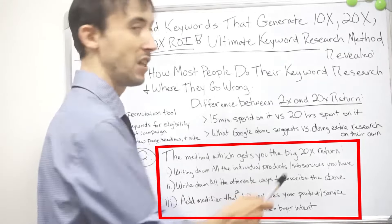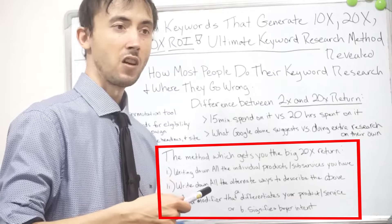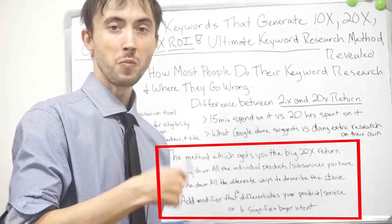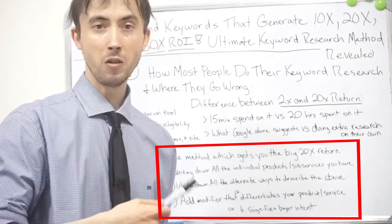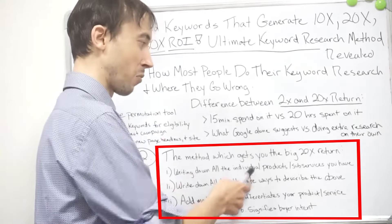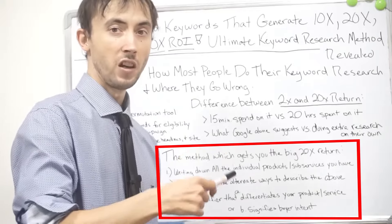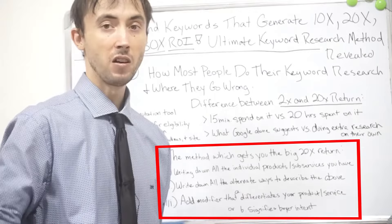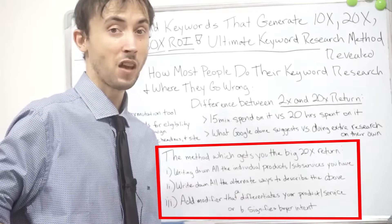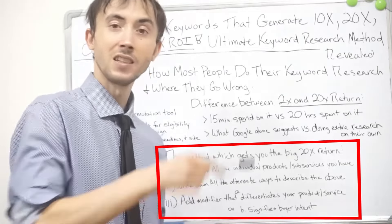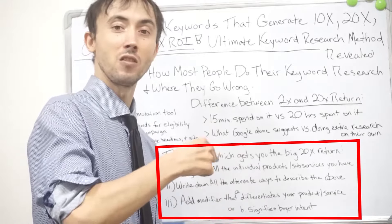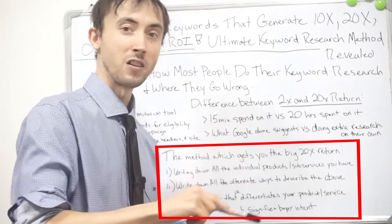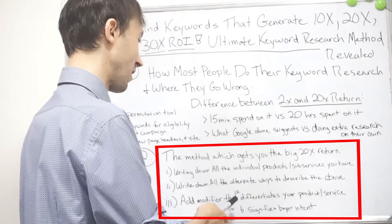You do that on each individual product or service that you have. Obviously, in some businesses like printer toner, it will be the same methodology for every product. But if your products are different enough that people type different things, you've got to do this for every single product. If you don't have time or don't believe me, do it for one product and see the return you're getting. Then you'll be able to instantly know the profit you're going to make once you do it for all your different products and services.